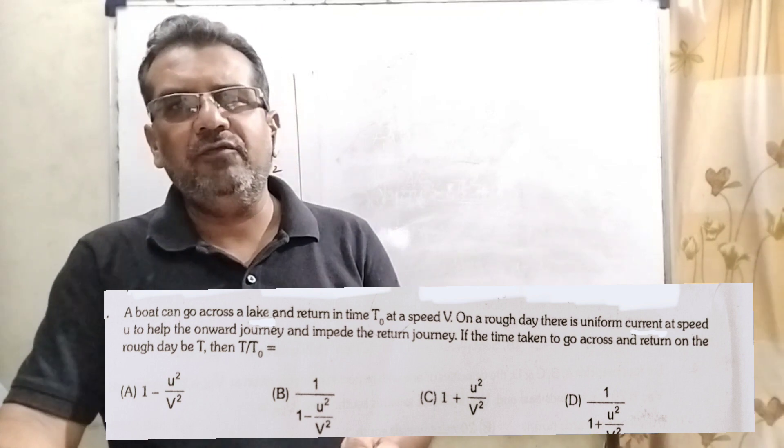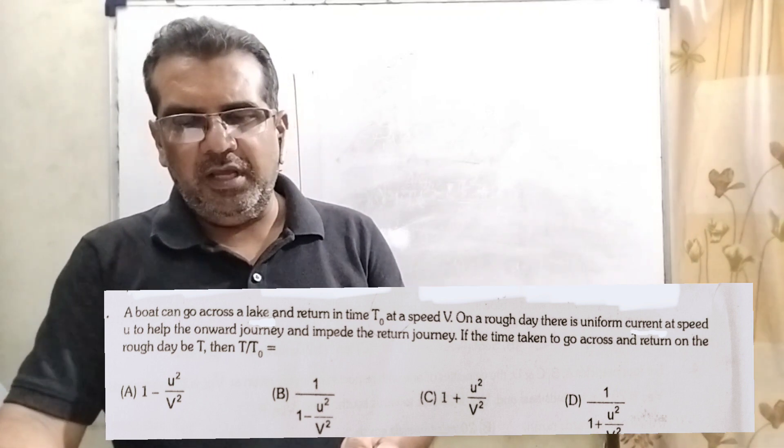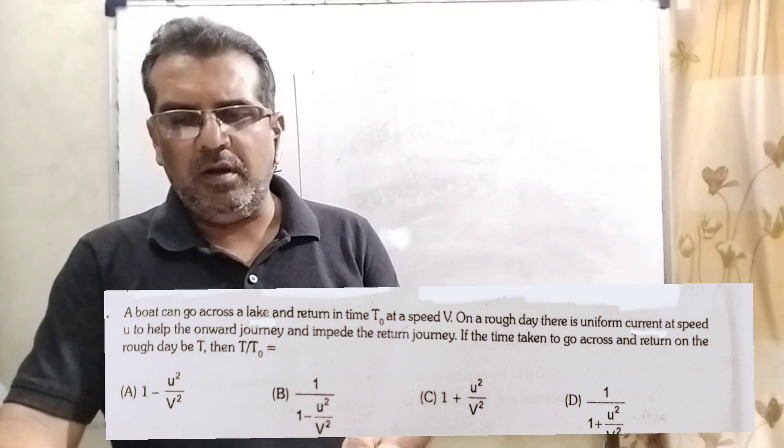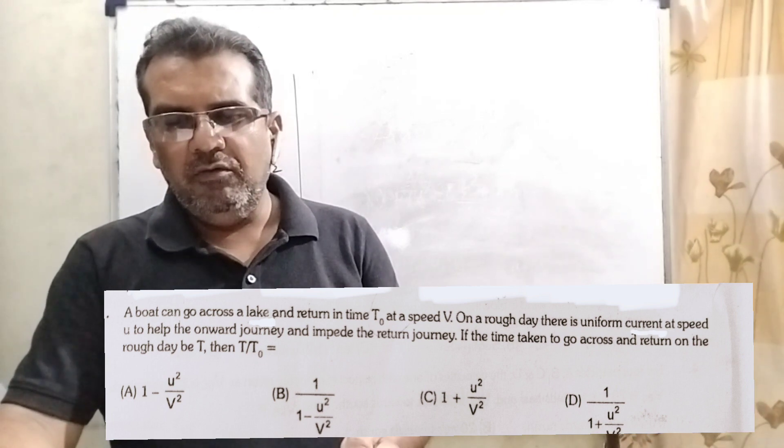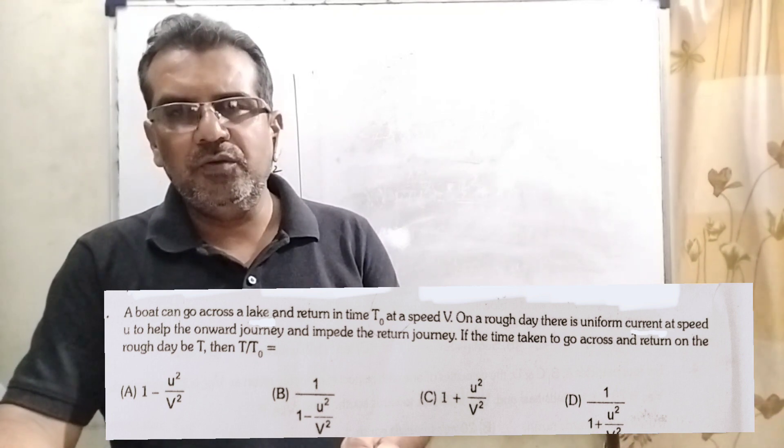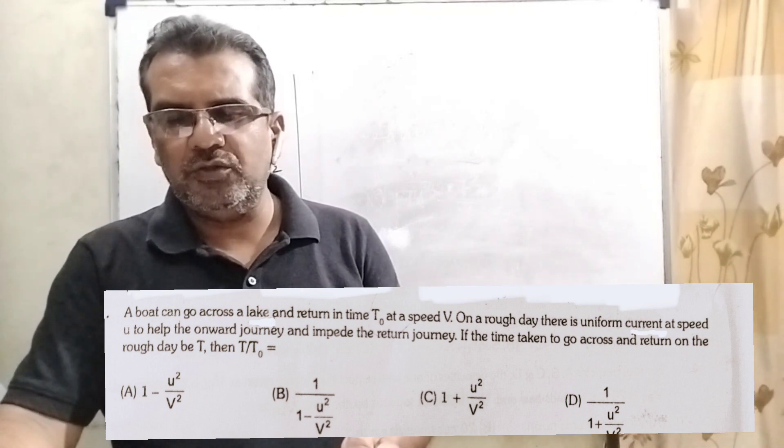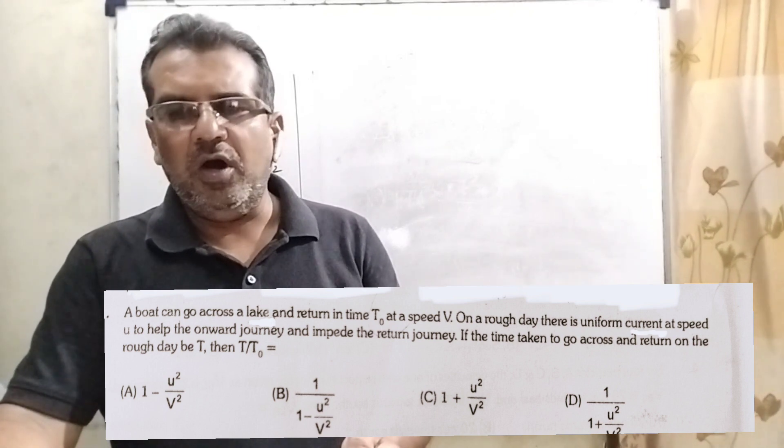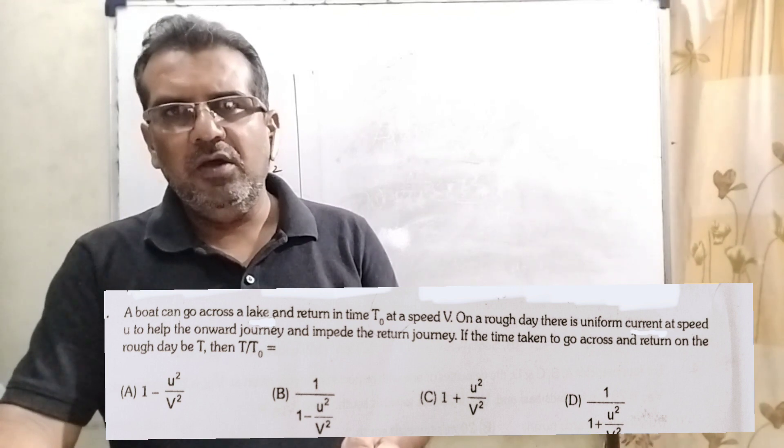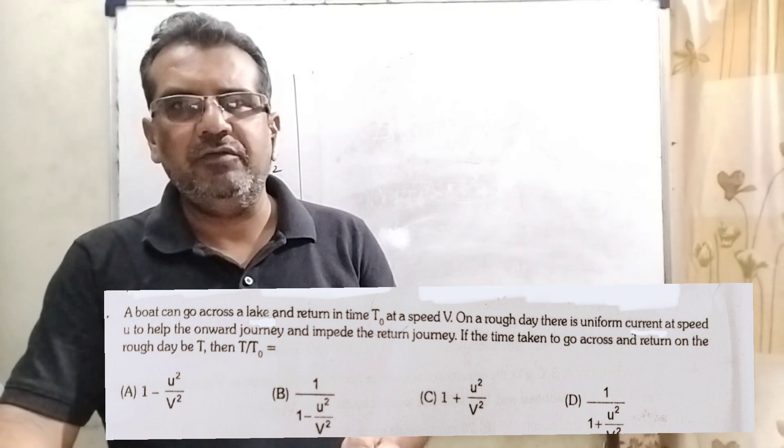Here we have given four options. Option A: 1 minus u square upon capital V square. Option B: 1 by 1 minus u square by capital V square. Option C: 1 plus u square by capital V square. Option D: 1 by 1 plus u square by capital V square.